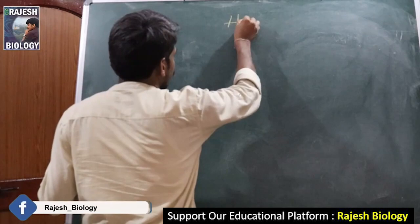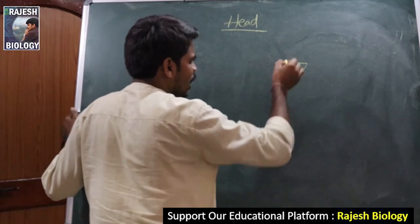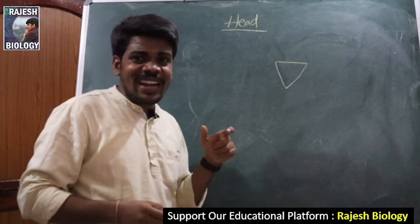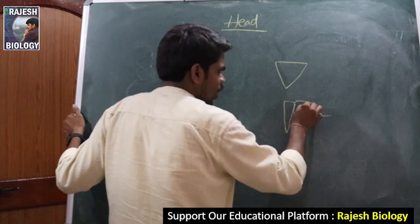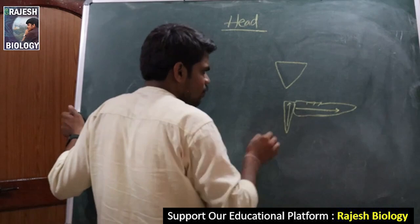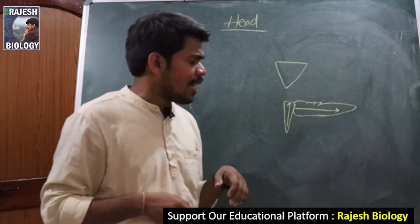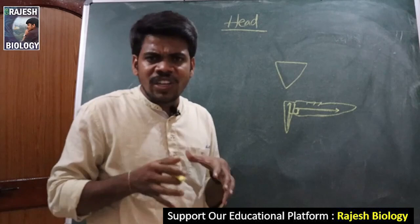The head of the cockroach is triangular in shape, and this triangular-shaped head is at right angles to the body. For example, the body — thorax and abdomen — runs horizontally, while the head is oriented vertically. So the head is along the y-axis and the body is along the x-axis, making it completely at right angles to the body, and it is triangular in shape.